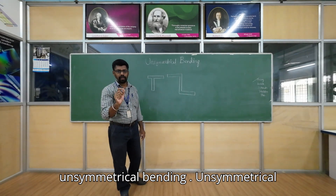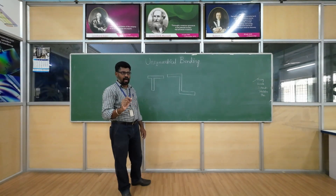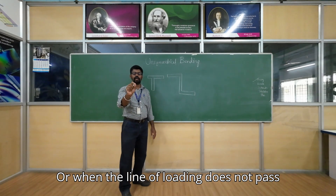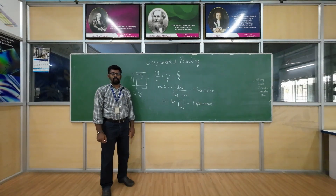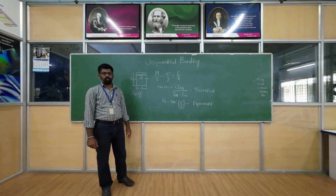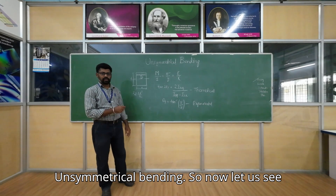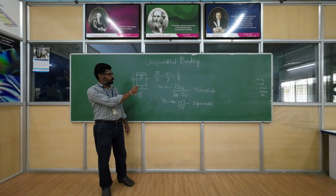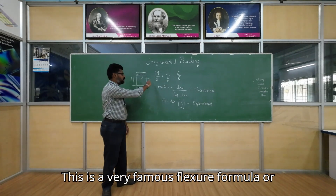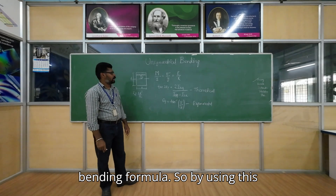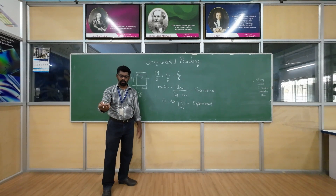Unsymmetrical bending occurs when the cross section of the beam is unsymmetrical, or when the line of loading does not pass through the shear center of the cross section. Now let us look at the theory of bending using the flexure formula. This is the famous structure formula: using it, one can compute the bending stress of a beam subjected to a transverse load or bending moment.